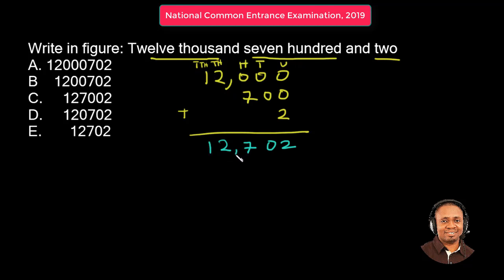Alright? You could have a comma in your answer option. There is no comma, but no problem. So this is the answer 12,702. So answer option E is the right answer.